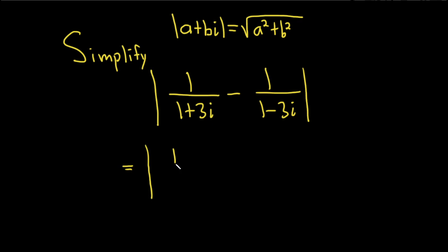So this is equal to, you have 1 over 1 plus 3i, and the common denominator is going to be 1 plus 3i times 1 minus 3i. So we're missing a 1 minus 3i here, so let's multiply by 1 minus 3i over 1 minus 3i. Just a clever way to get what we want.